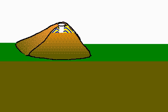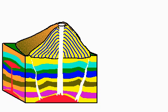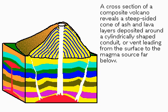A cross-section of a composite volcano reveals a cone of ash and layers of lava deposited around the vent that leads to the source of molten rock or earth magma far below.